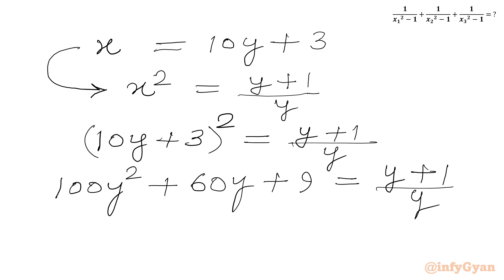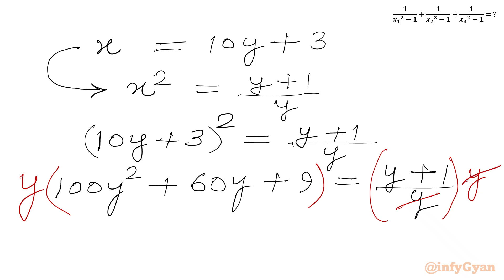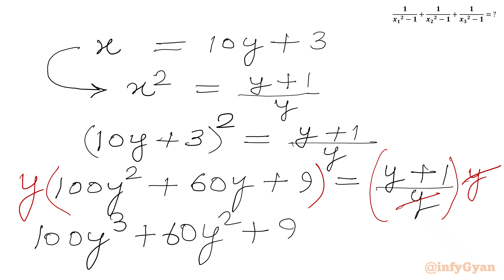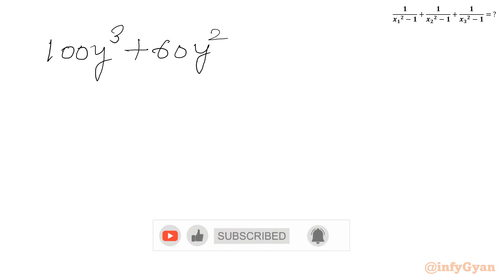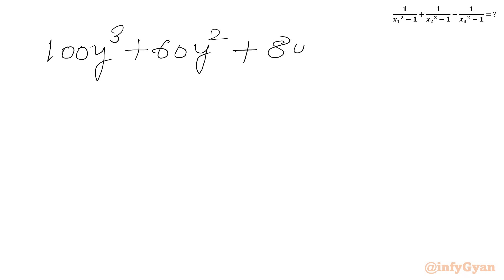Multiplying both sides by y: 100y³ + 60y² + 9y equals y + 1. Bringing all terms to the left-hand side: 100y³ + 60y² + 9y minus y minus 1 equals 0, giving us the cubic equation 100y³ + 60y² + 8y minus 1 equals 0.